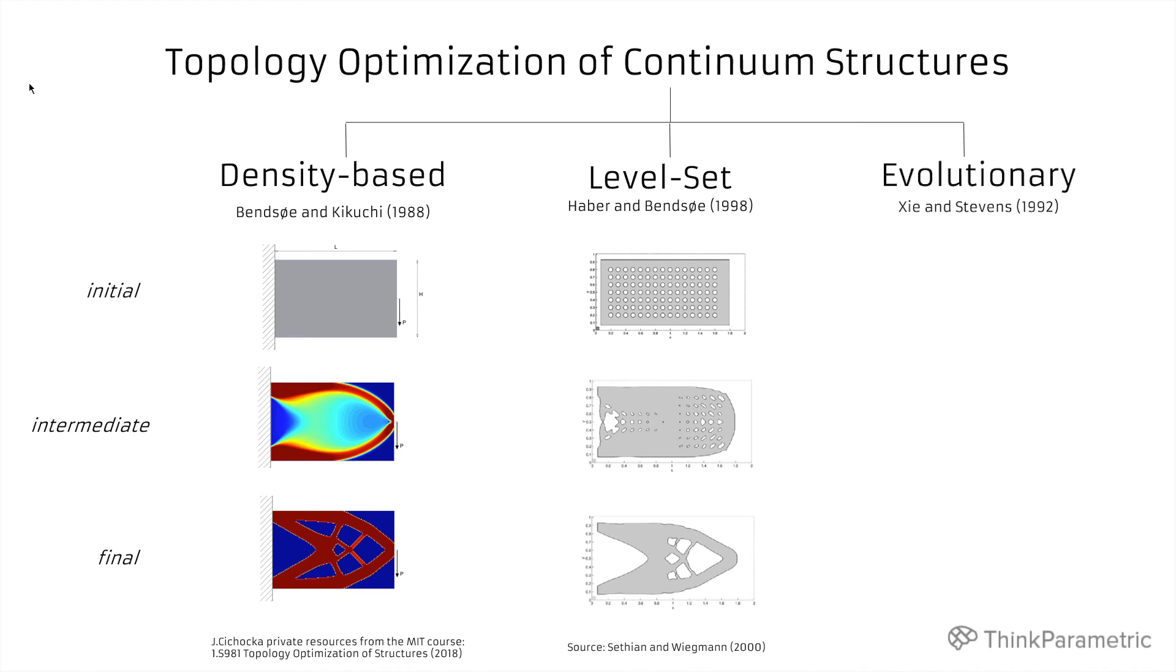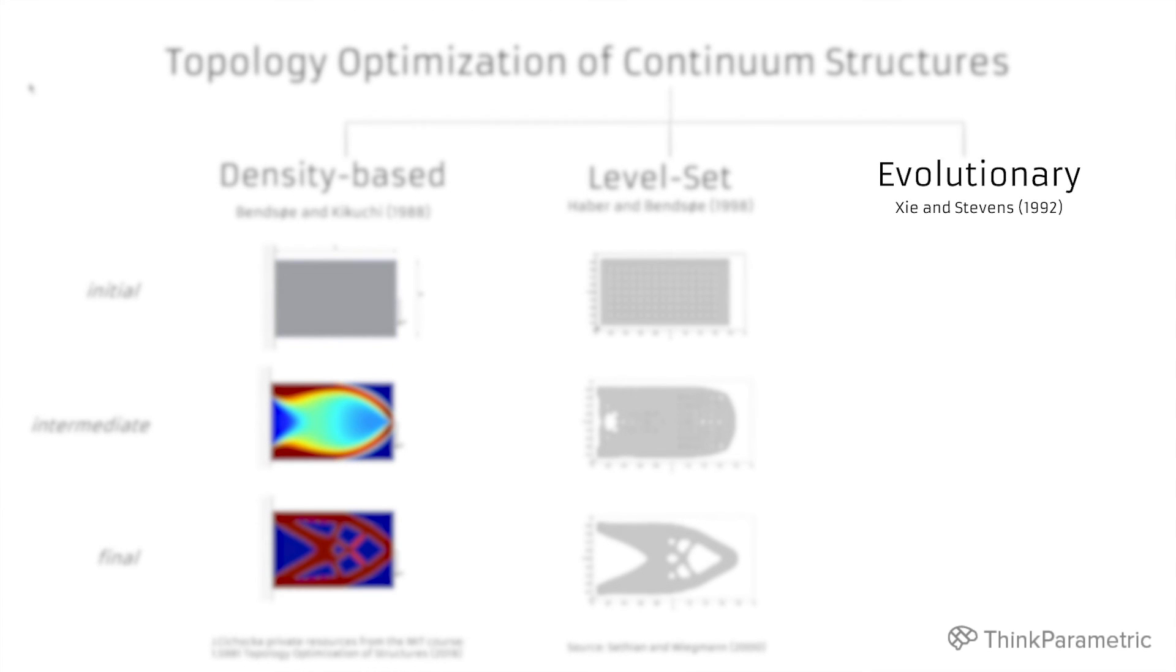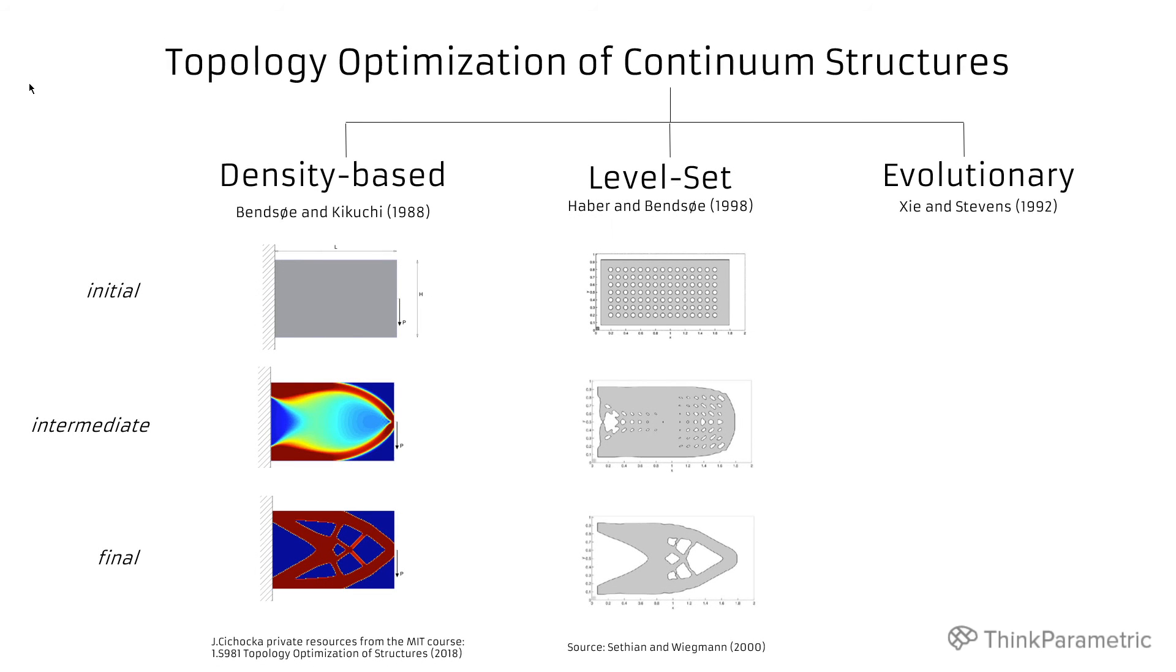And then at the end we have evolutionary structural optimization invented in early 90s. I would like to direct your attention to evolutionary. It doesn't mean that it involves any kind of genetic algorithms. Evolutionary here stands for just an iterative process. And again we start a full design domain. And then in an iterative way we try to remove the elements that are least stressed to end up with fully stressed design.